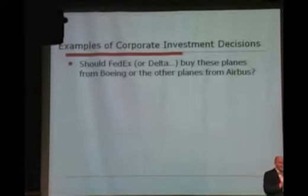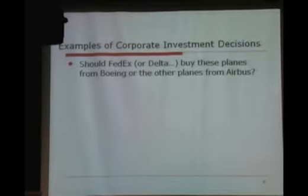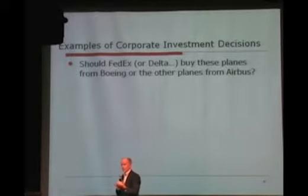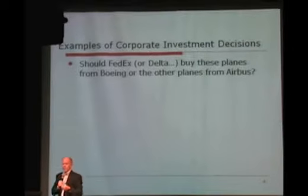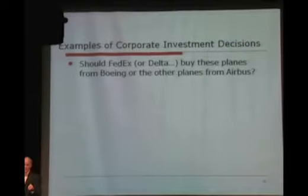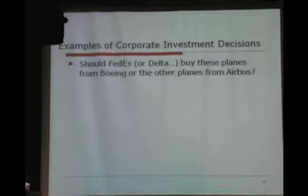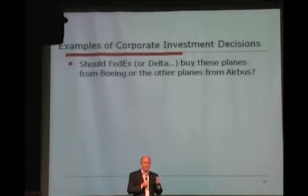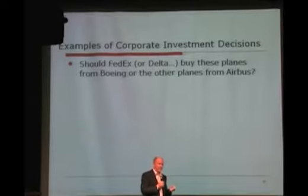Say you work for FedEx or Delta and you have to choose airplanes to buy. Should we buy from Boeing or from Airbus? They both do the job. One's less expensive — that's a good thing. But maybe the other one costs less to maintain and operate over time, and maybe one has a longer useful life. Finance people have to make those trade-offs. This is called capital budgeting.